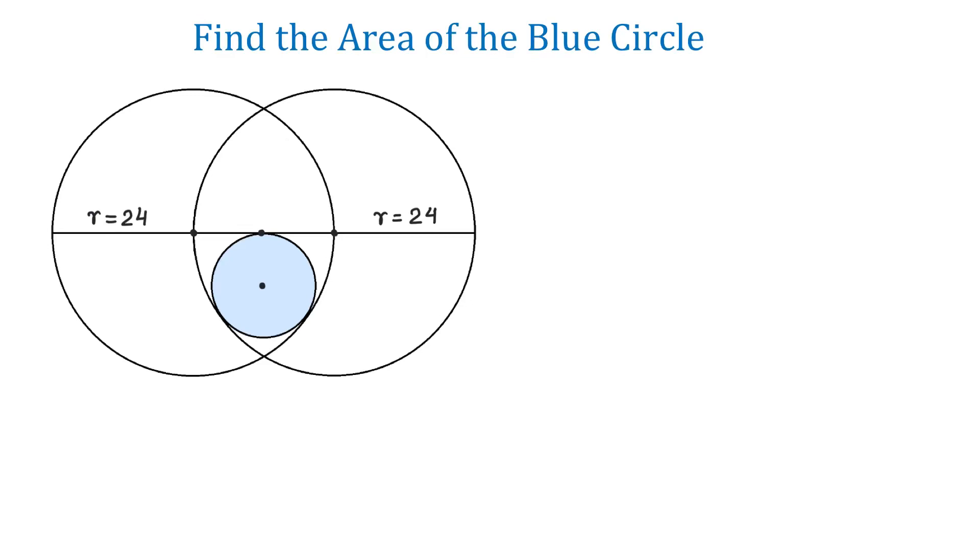In this figure, we have two circles, each of radius 24 units, and we need to find the area of the blue circle.